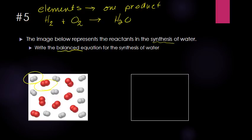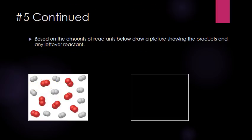We have two oxygens on the reactant side but only one on the product side, so I put a 2 in front of H2O. That gives two times two equals four hydrogens on the product side, but I don't have four hydrogens on the reactant side, so I put a 2 in front of H2. The balanced equation is: 2 H2 + O2 → 2 H2O.